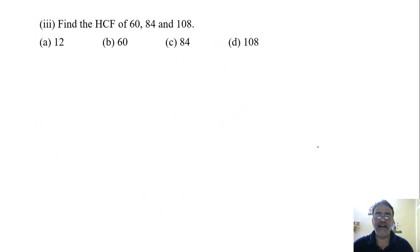Now the next question: find the HCF of 60, 84, and 108. We already got the prime factors in the previous question. We know that HCF equals the product of all the common prime factors with the least power. Here only two prime factors are common: 2 and 3.